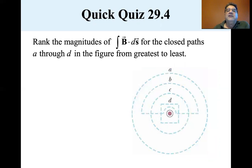Now let's rank the magnitudes of B dot DS for the closed paths a through D in the figure from the greatest to the least. Well, let's see.